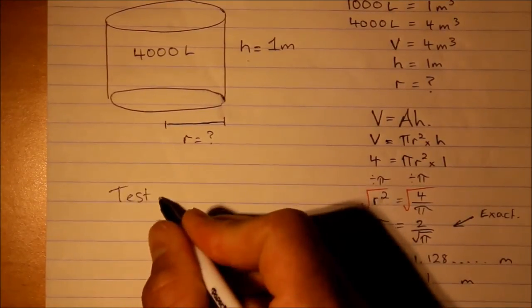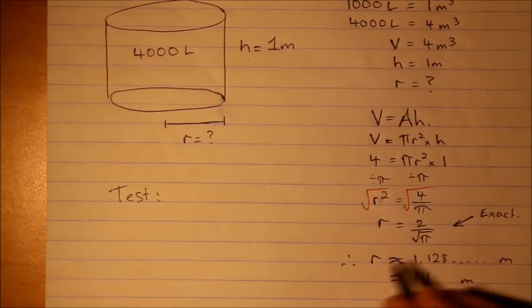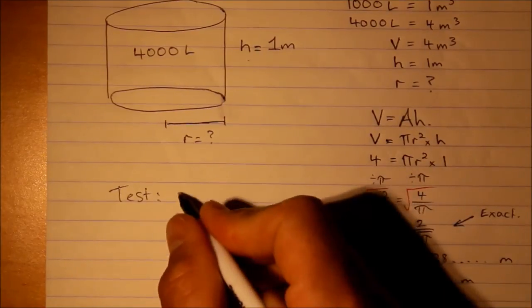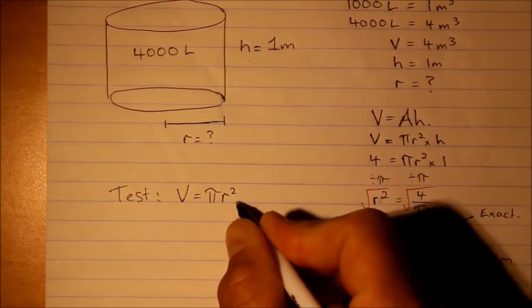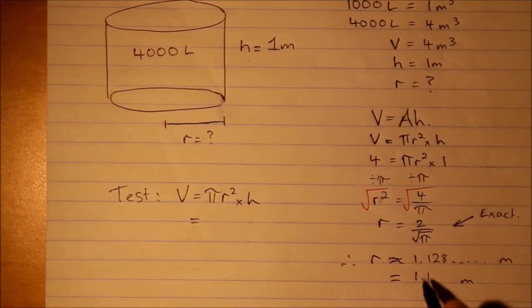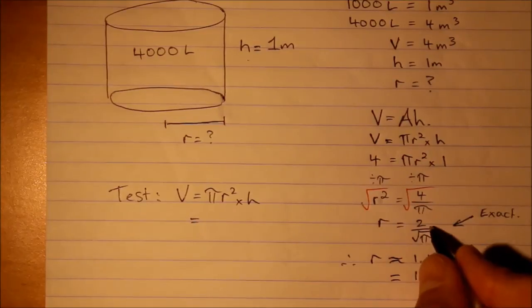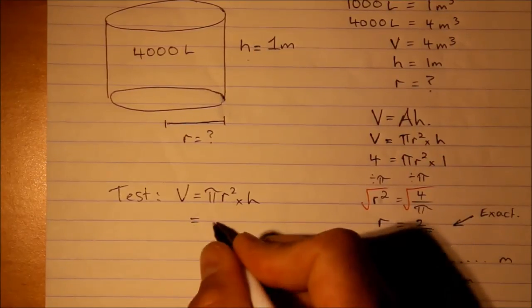How do you test it? Well you take what you get and work forwards. So we know that volume is pi r squared times h. Let's put this answer in now. We may as well put the exact answer in.